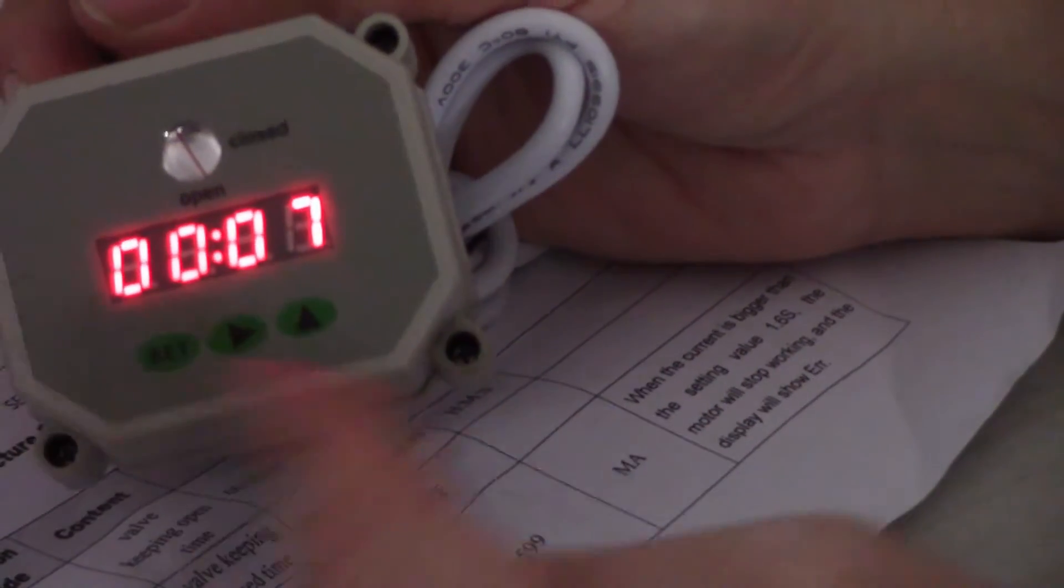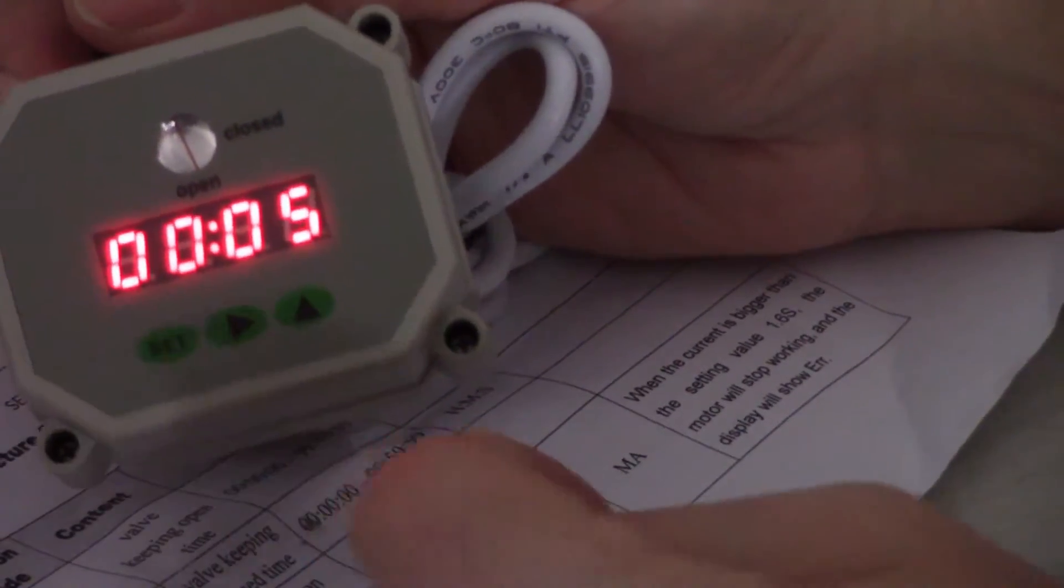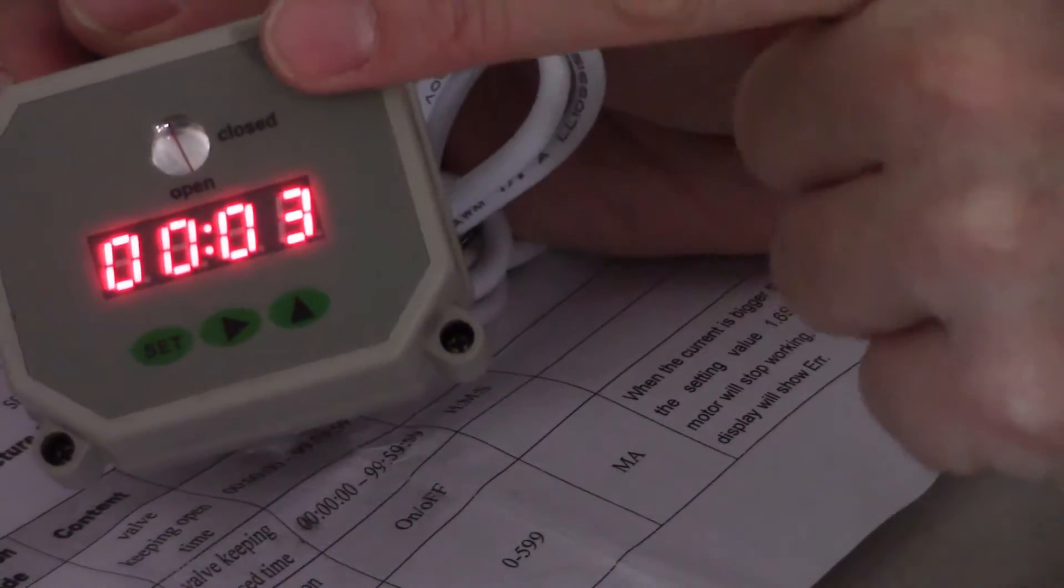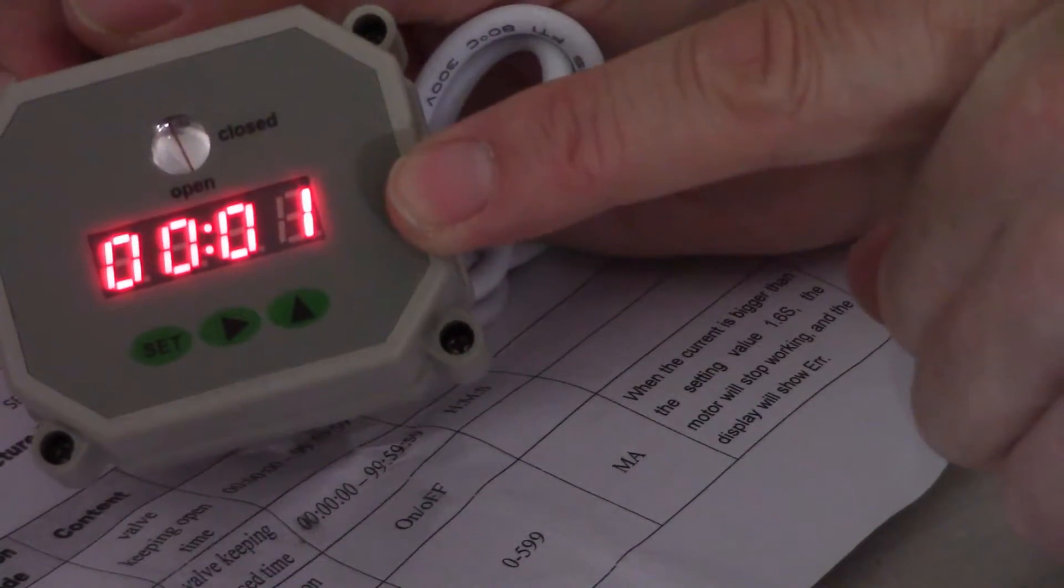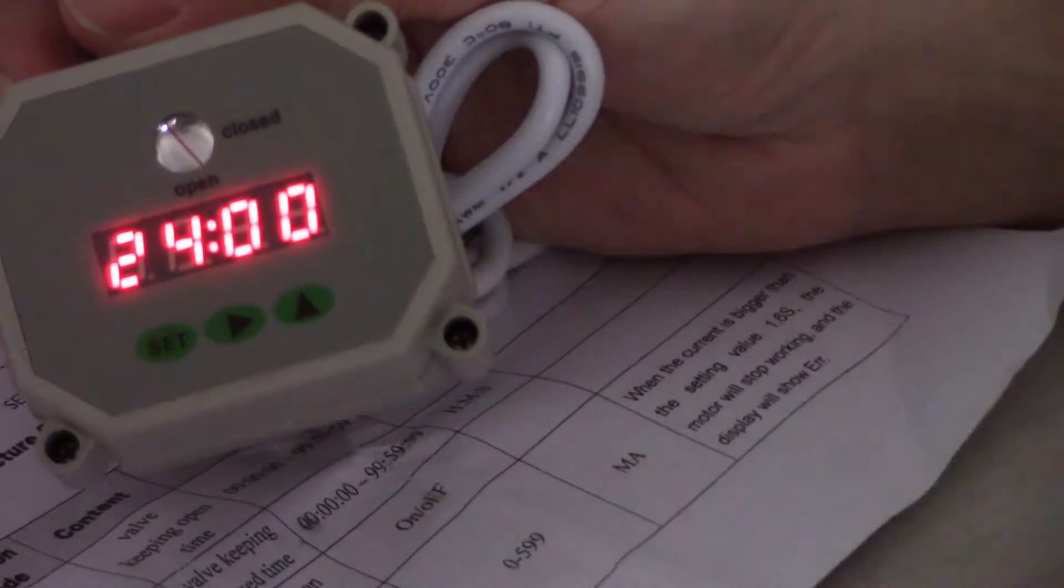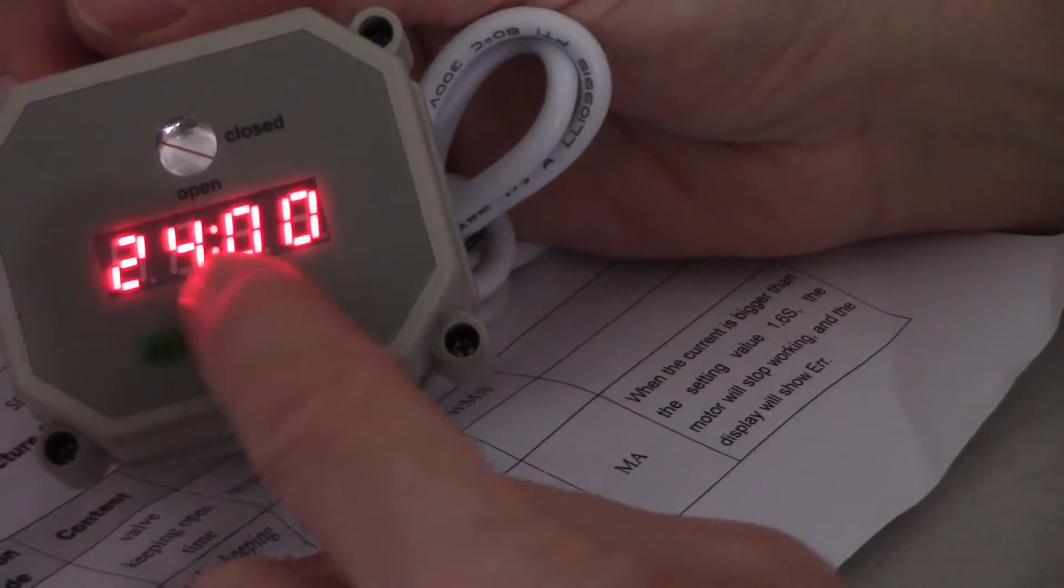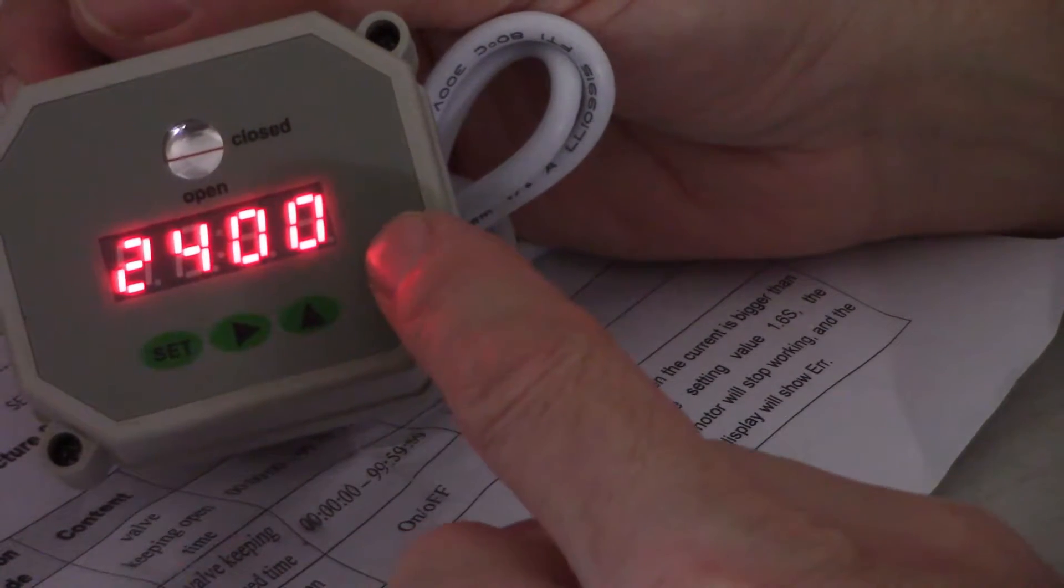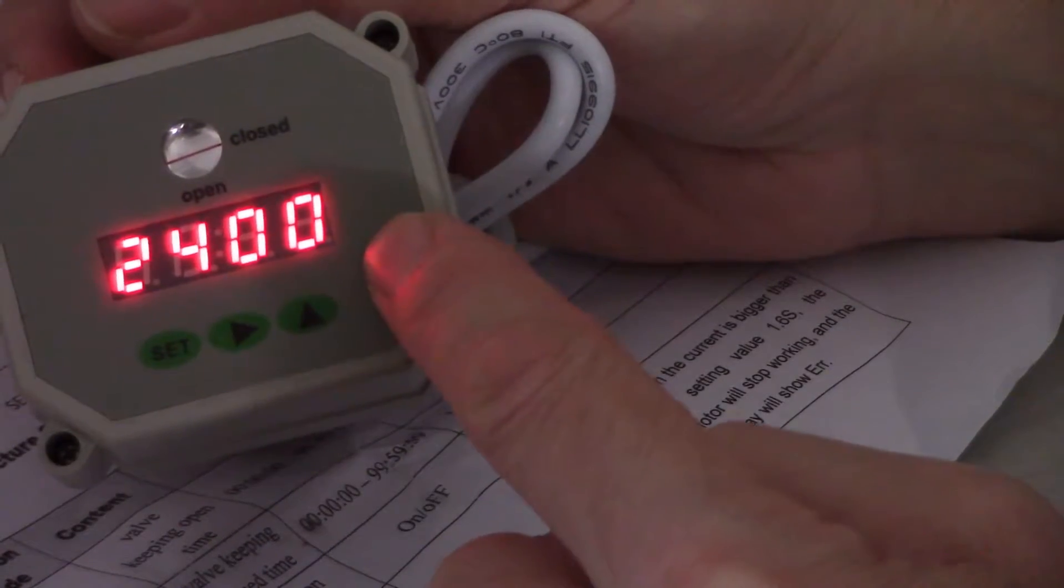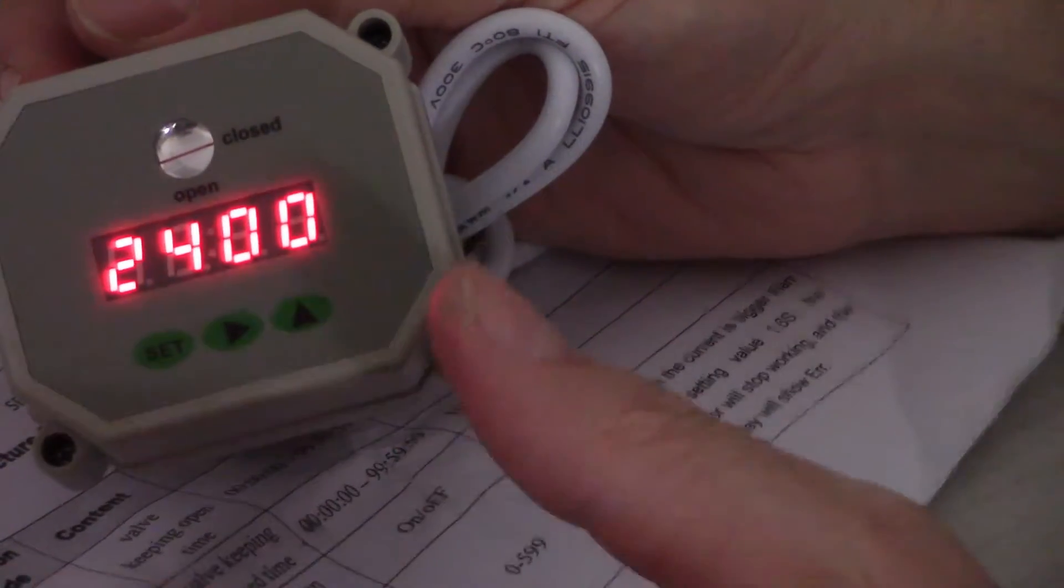Now it just backed out of the programming because I didn't press the buttons for a little bit, so now it changed the state to open. It counted down for 12 seconds. Now it went back off and now you can see I programmed it for once a day every 24 hours.